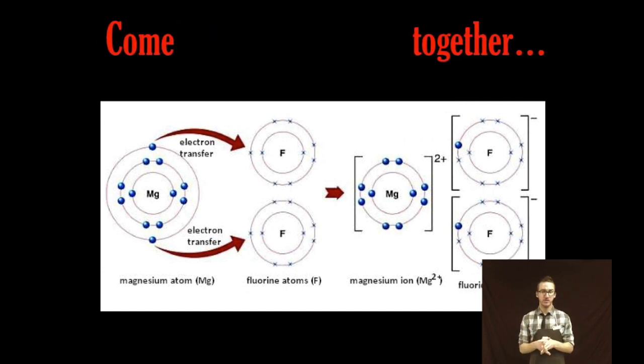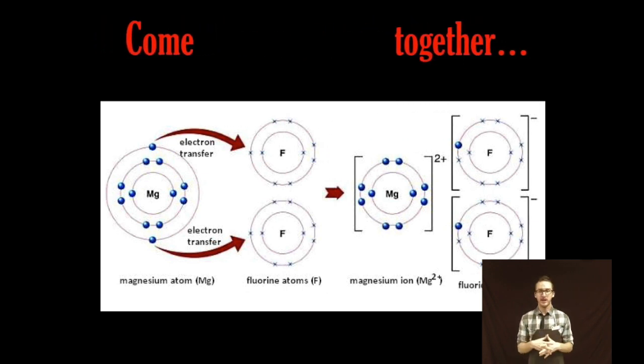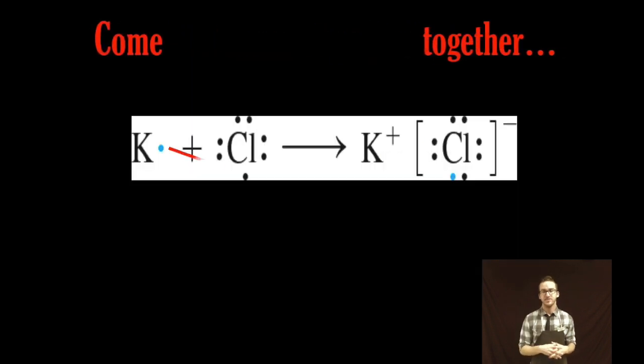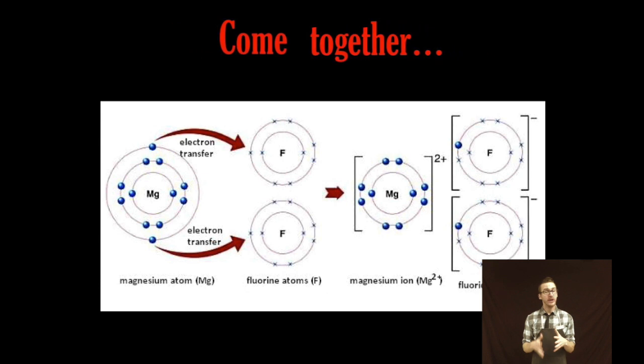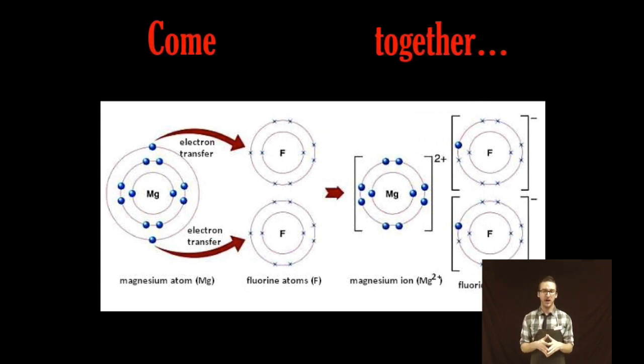Your magnesium ion forms a charge of two plus and each fluorine atom forms an ion of one minus. As you think about why the ratio here is one to one and why the ratio here is one to two again keep in mind that our goal is to form compounds with an overall neutral charge.